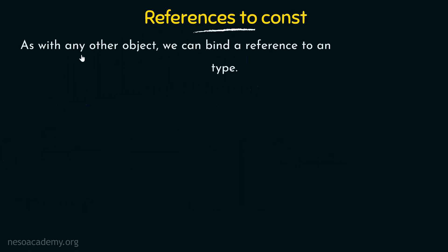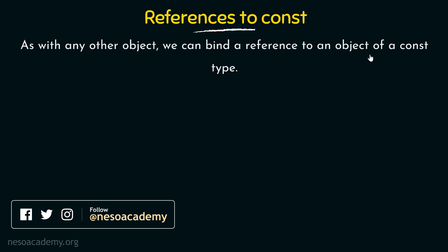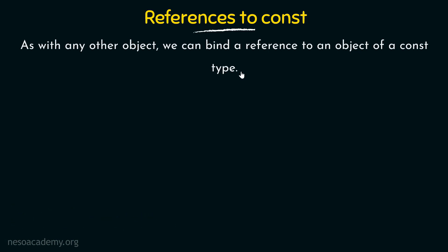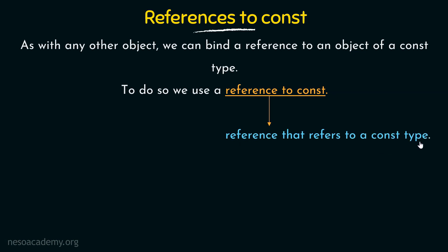Talking about references to const: as with any other object, we can bind a reference to an object of a const type. We saw that references are used for binding to some other object that already exists. In the same way, we can also bind a reference to an object of a constant type. To do so, we use a reference to const, which means they are references that refer to a constant type.